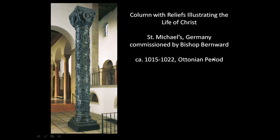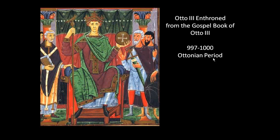Finally, we have 'Otto III Enthroned' from the Gospel Book of Otto III. This painting is significant because it once again expresses the Carolingian and Ottonian desire to hark back to early Christian Rome or the Byzantine Empire. Take a look at the composition — it should seem familiar. Pause and try to identify what artwork this is emulating, keeping in mind the hint that it comes from early Christian Rome or Byzantium.